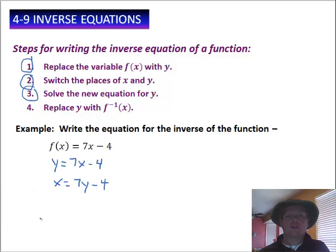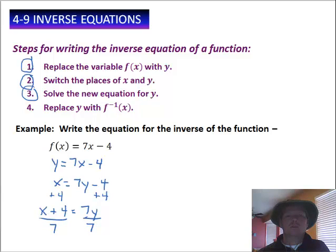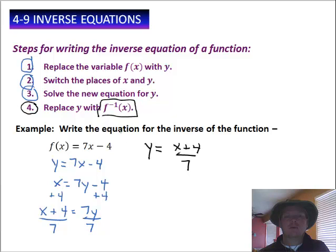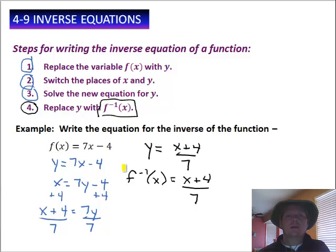The third step says to solve that equation for y. I'm going to add 4 to both sides to start getting y by itself, and that gives me x plus 4 equals 7y. The last step is to divide by 7, so that gives us y equals x plus 4, that quantity, divided by 7. Now the last step says to replace the y with the inverse statement, so f to the negative 1 of x equals x plus 4 over 7. And that's our answer.